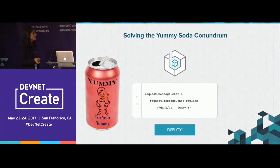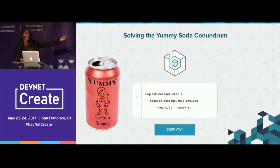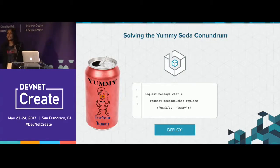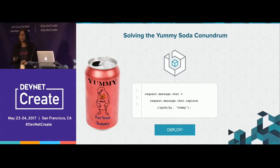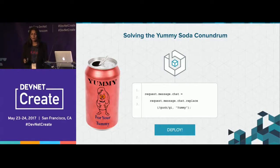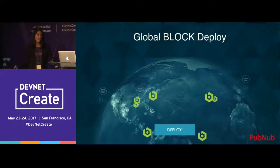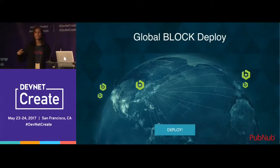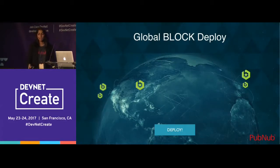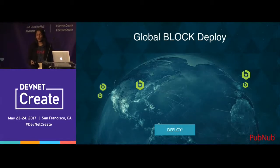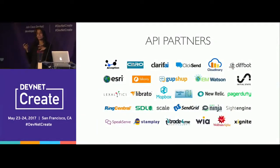For the Yummy soda problem, you'd solve it like this: a message comes in through PubNub, hits the block, and you look for the word 'Gunk' and replace it with 'Yummy.' You can transform it, count occurrences, or do any kind of business logic or in-stream processing on the message before sending it out — no need to deploy your own servers. You click a button, there's an animation showing how it's deployed all over the PubNub network, and every single message will now be processed by this block before reaching end devices. Blocks is essentially a way to spin up microservices on the PubNub network very easily.